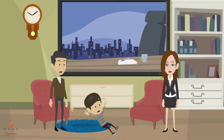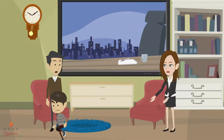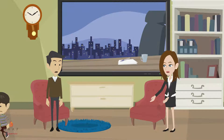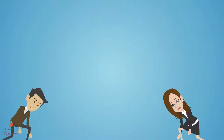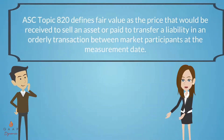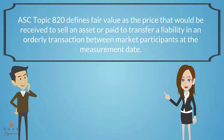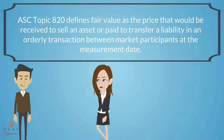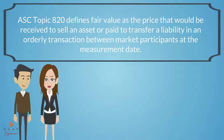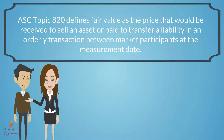But before we dive in, let's review the definition of fair value. ASC Topic 820 defines fair value as the price that would be received to sell an asset or paid to transfer a liability in an orderly transaction between market participants at the measurement date.